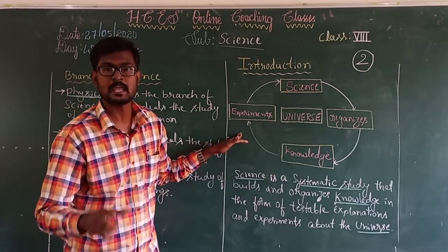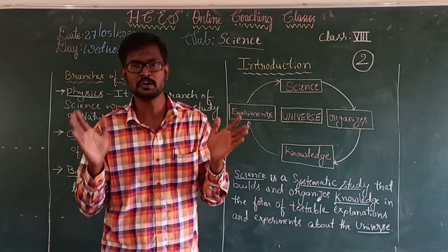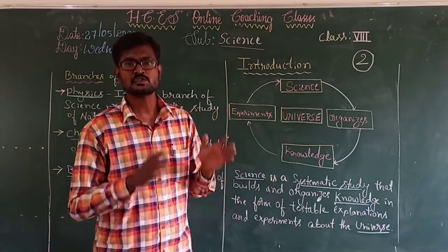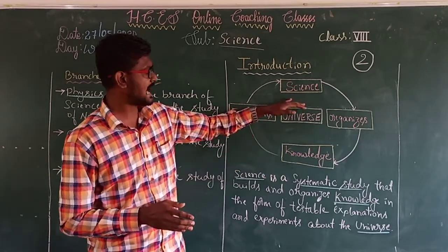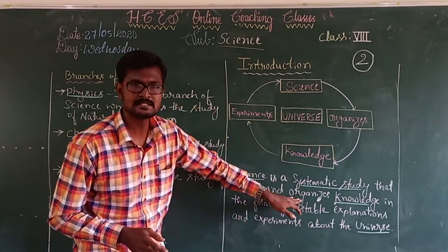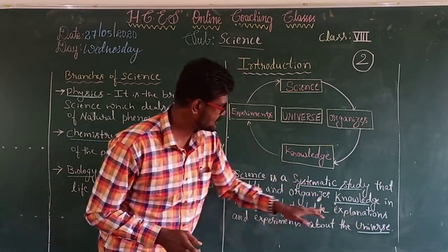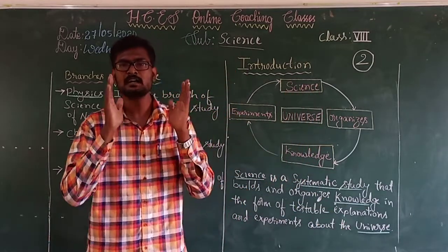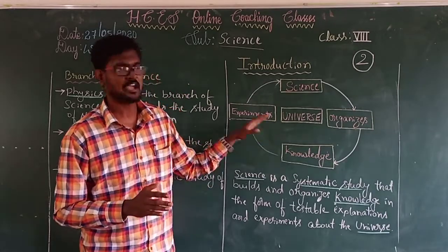About what? What are we going to learn here? About the whole universe. So if you want to learn science, we have to learn the whole universe. So now we have got a definition for science: science is a systematic study that builds and organizes knowledge in the form of testable explanations and experiments about the universe. This is the definition for science.